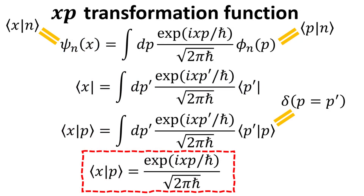From the Fourier transformation relating the two wave functions, we can also derive a useful identity. First, we write the two wave functions in terms of their Dirac bracket notation. The n-ket on the two sides of the equations cancels, and then we multiply by the p-ket. Using the orthonormality relation of the p basis, we can get rid of the integral and replace p' with p. We end up with an expression for the inner product of the x-ket with the p-ket, which we call the x-p transformation function.